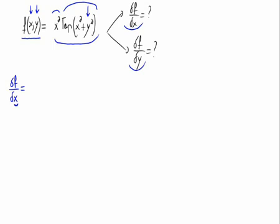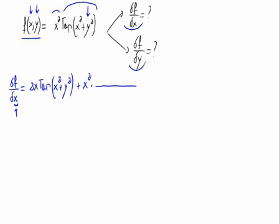So the derivative would be the derivative of the first term, x squared — that's 2x — times the second term, plus the first term times the derivative of the second. The second term is a tangent, and the derivative of a tangent is the derivative of what's inside. As we are differentiating with respect to x, it would be 2x plus the derivative of y with respect to x. As y is a constant, that's 0.